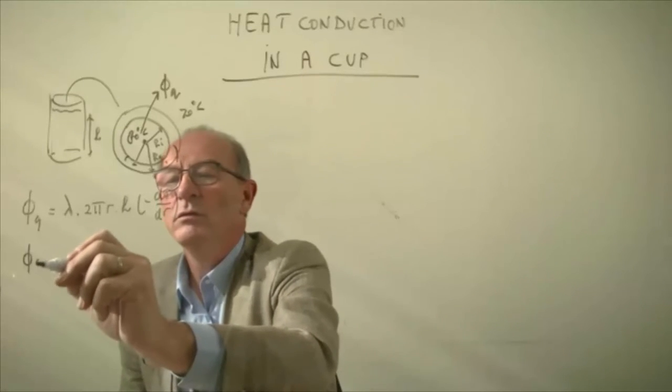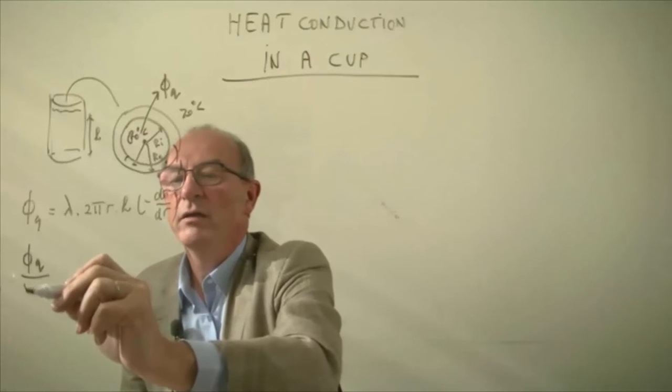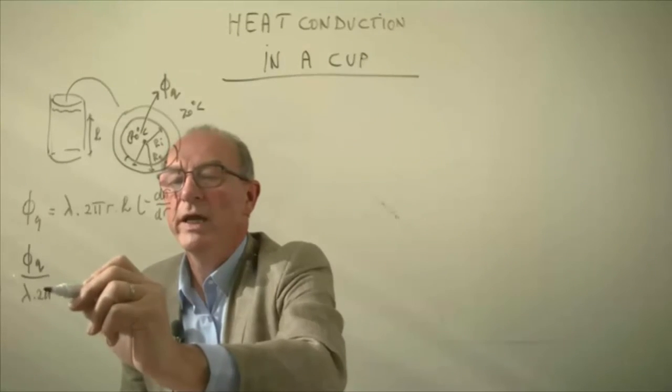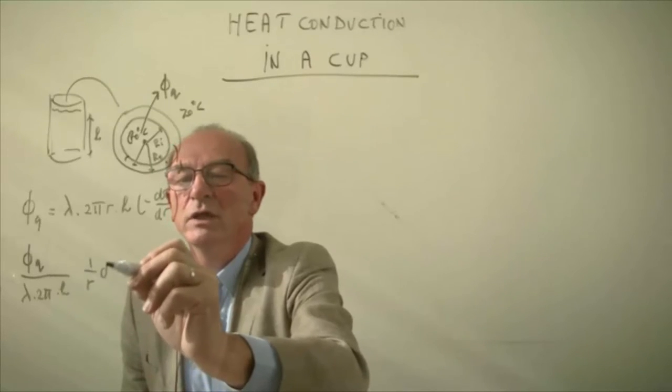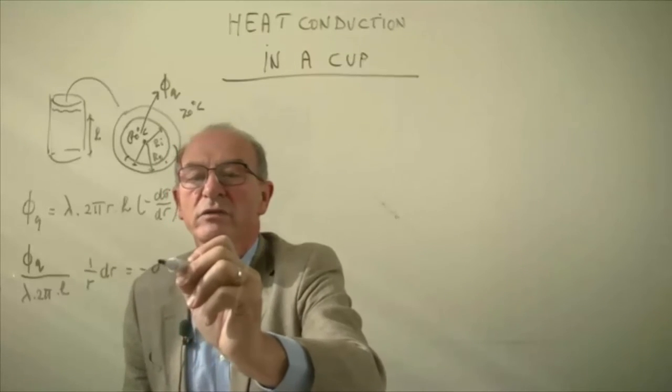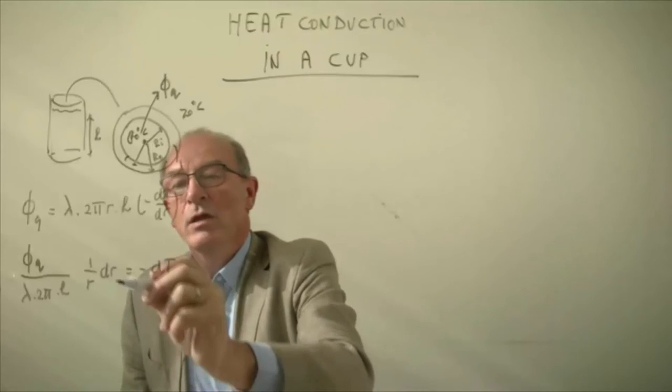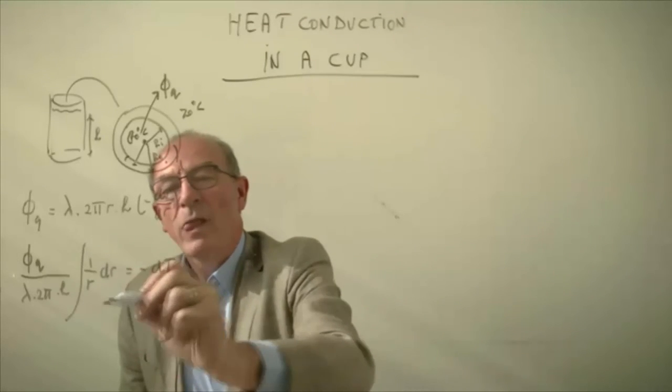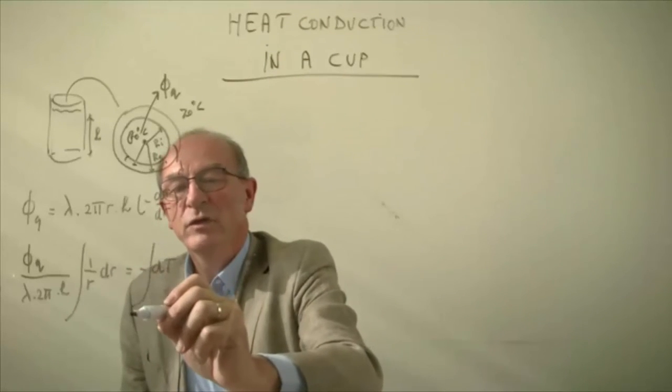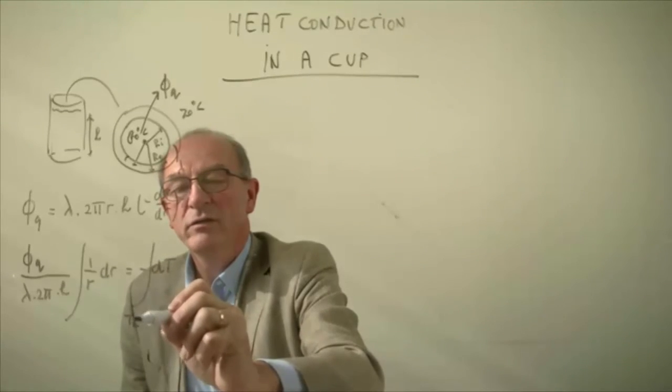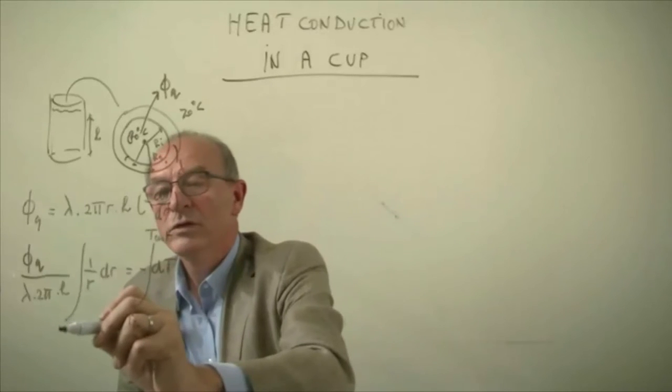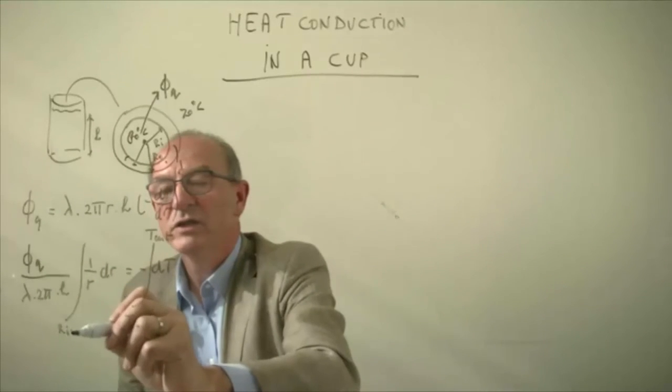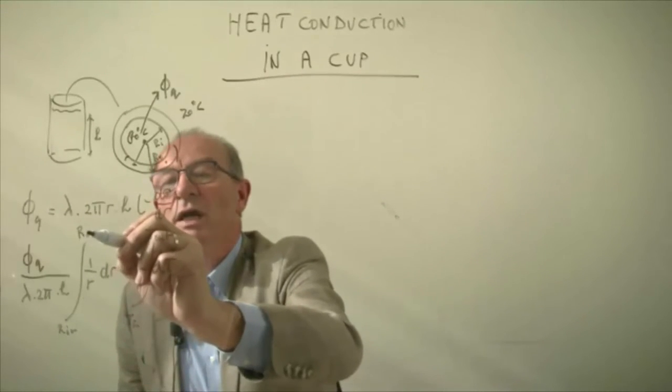So phi q divided by lambda 2π h, 1 over r dr is equal to minus dT. We now have to integrate this on both sides from T inside to T outside respectively, and r inside and r outside.